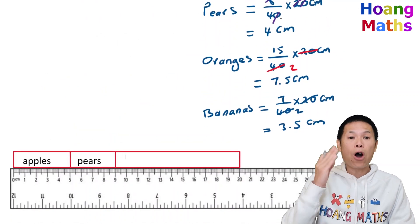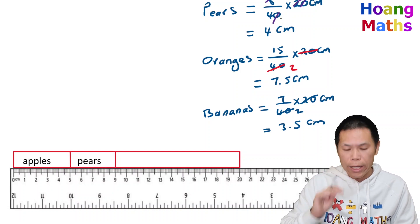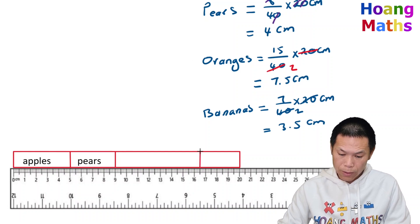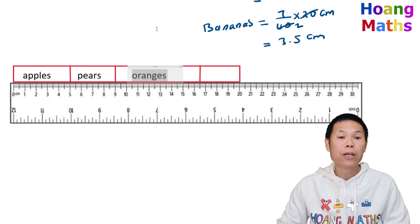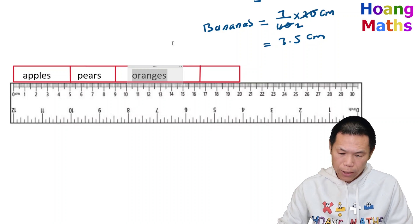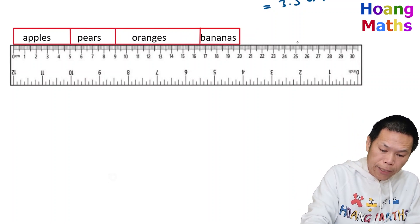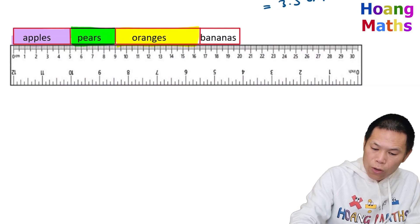For oranges, 7.5 centimeters: starting from 9, we add 7.5 to get 16.5. Count from 9: one, two, three, four, five, six, seven — and half — so mark at 16.5. That section is oranges. Whatever is left should be bananas, which is 3.5 centimeters. Count one, two, three, three point five — there you go. Now I can label each section: apples, pears, oranges, and bananas.